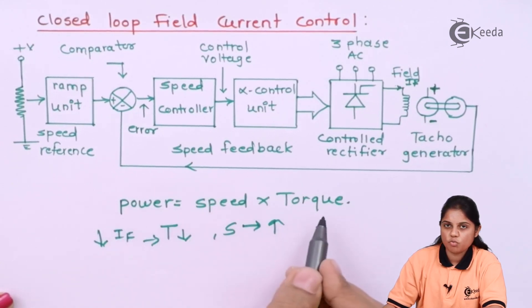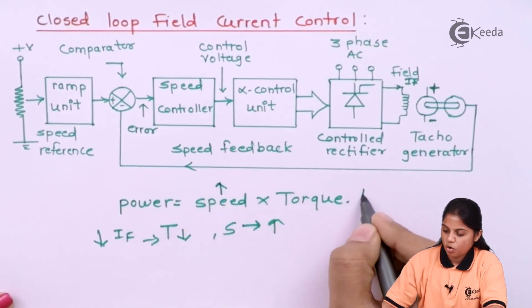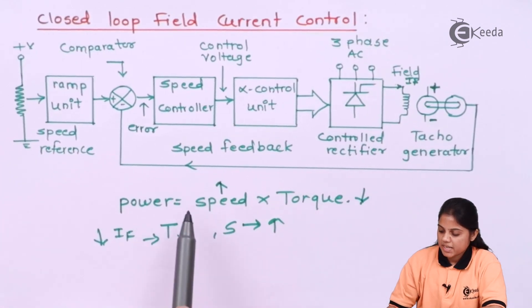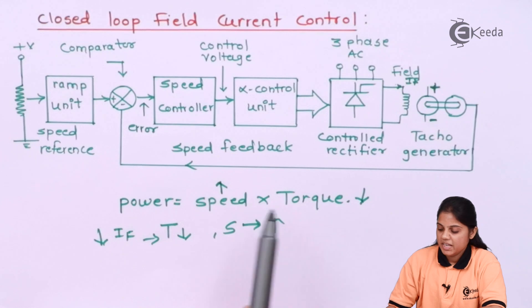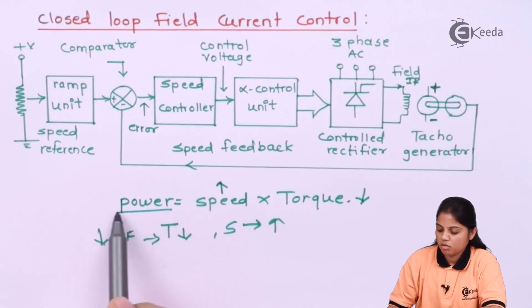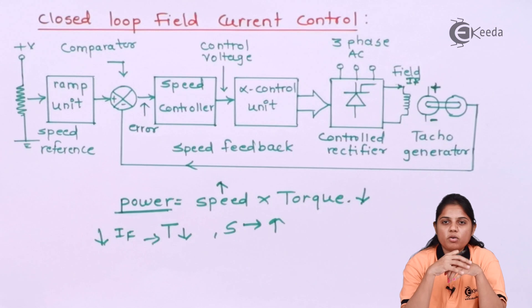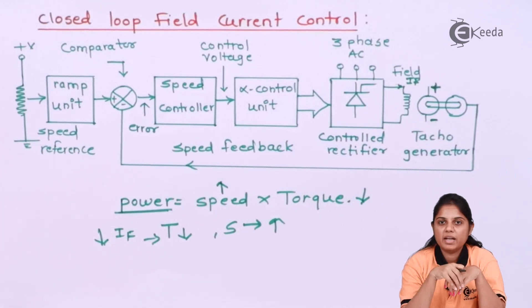Basically in this region, your speed is increasing and torque is decreasing. Because there is an increase in one parameter and decrease in one parameter, it will keep your power constant. Hence the region is called the constant horsepower region.